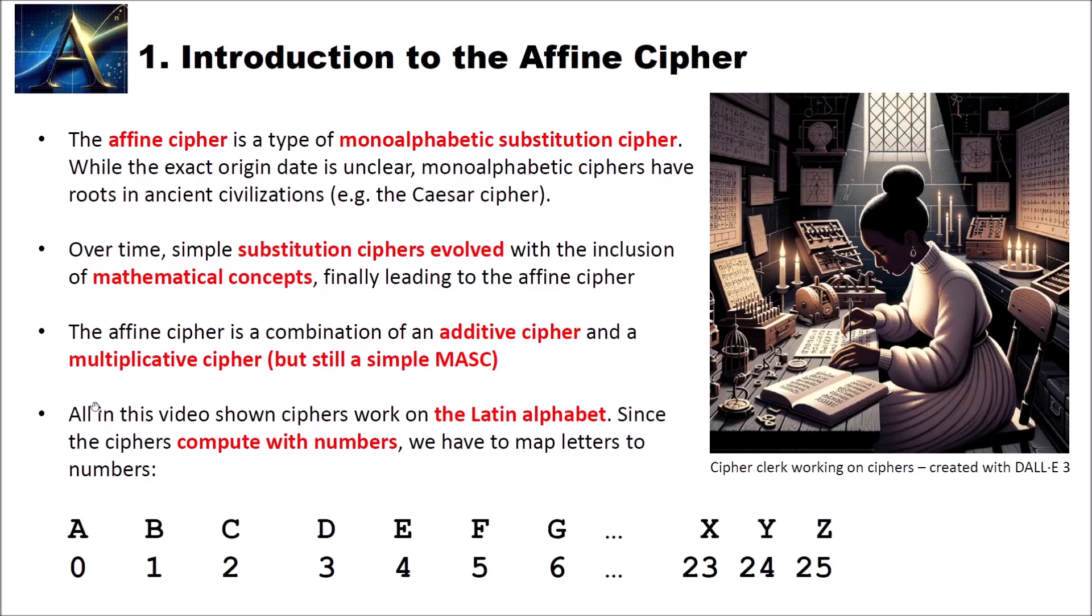All ciphers shown in this video work on the Latin alphabet. So we have 26 letters. And since these ciphers compute with numbers, we have to map letters to numbers and back. Here we have the Latin alphabet A, B, C and so on until Z. And the A is mapped to 0, the B to 1, the C to 2 and so on until the Z is mapped to 25.